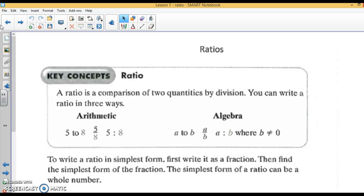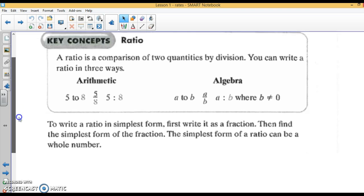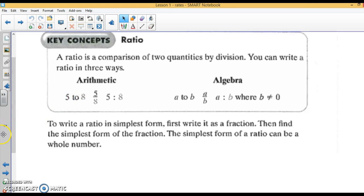We are talking about ratios. A ratio is comparing two quantities by division. You can write a ratio in three different ways: 5 to 8, 5/8 as a fraction, or 5:8 with a colon. All of these mean exactly the same thing. Writing this algebraically, A to B, A/B, A:B, where B is not zero. Because you can never have zero in the denominator - it's undefined.